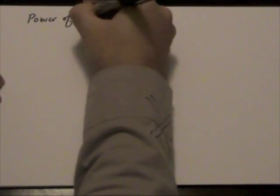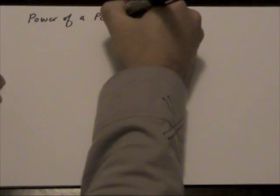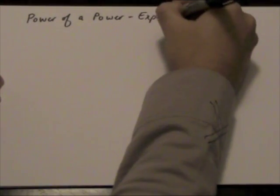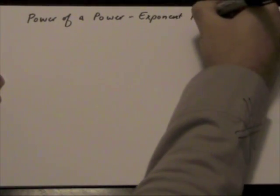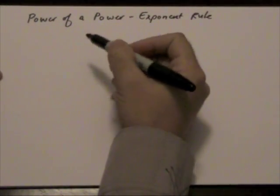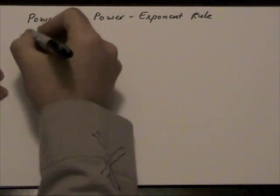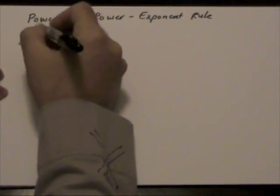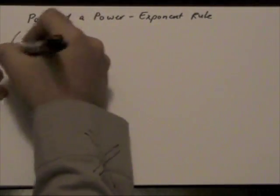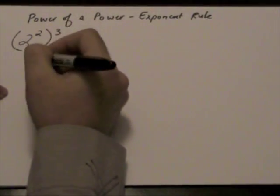Power of a power. Exponent Rule. In this lesson, we're going to be looking at what happens when we have the following expression: 2 to the power of 2, all to the power of 3.